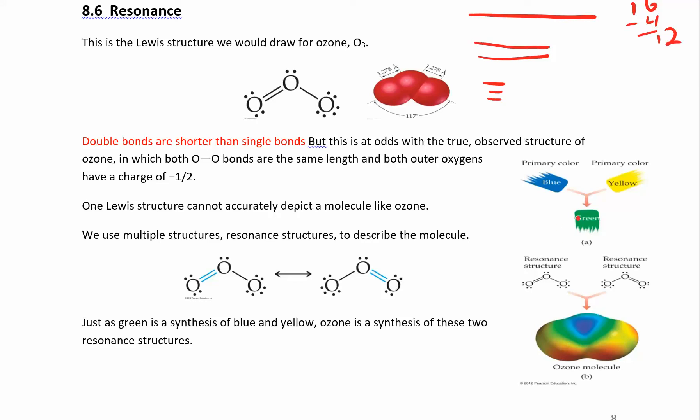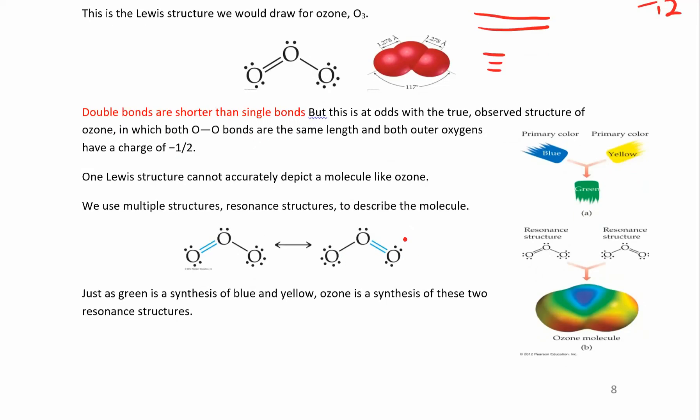Just like when you see green, when you have the color green, it's not sometimes it's blue and sometimes it's yellow, it's always a perfect mixture of both of those colors. The same idea with these resonance structures. Just representing one by itself doesn't represent the whole picture. You have to show both of these resonance structures.